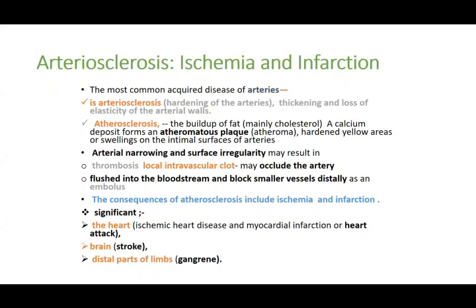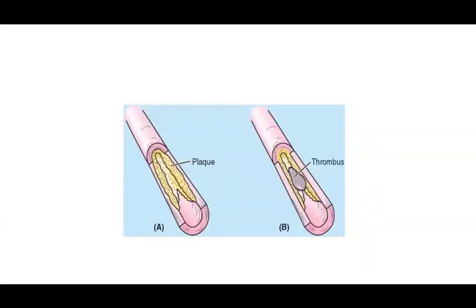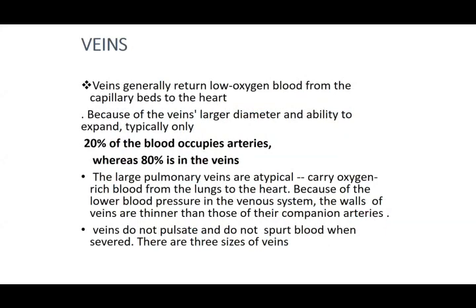Consequences of atherosclerosis include ischemia, infarction, and cell death of the area supplied by the affected vessel. In the heart this is ischemic heart disease or myocardial infarction; in the brain it causes stroke; in the limbs it leads to gangrene. The slide shows cholesterol and fat deposition narrowing the vessel wall, with the irregular interior surface causing blood cells to stick and forming a thrombus, which if dislodged results in embolism.